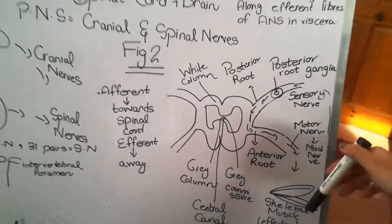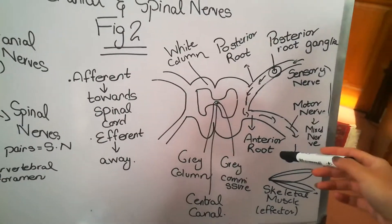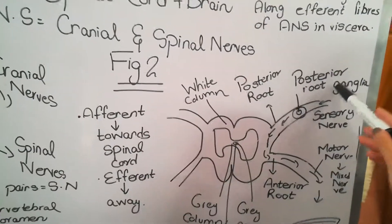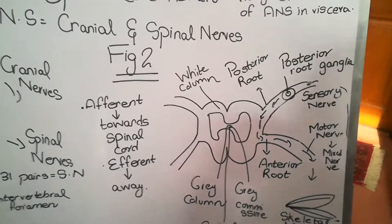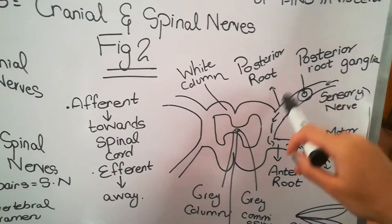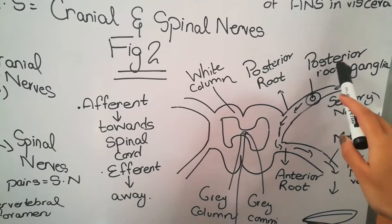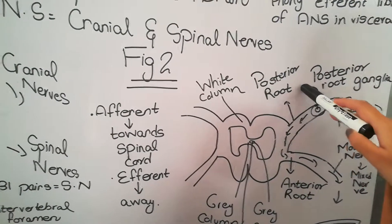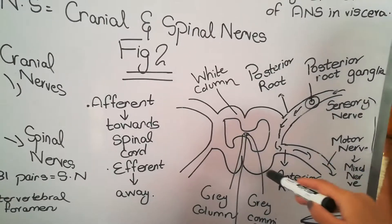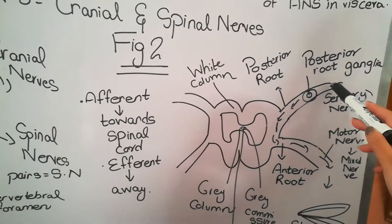The one that is facing towards the front is known as the anterior or the ventral root. This here is a ganglion. A ganglion is basically a collection of cell bodies which are present outside the spinal cord. It is called the posterior root ganglion because it is on the back side or the dorsal side of the spinal cord.